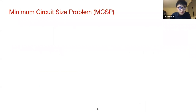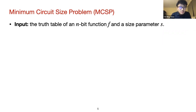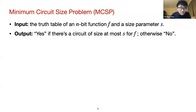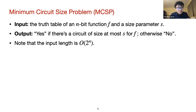Let me formally define the minimum circuit size problem. For MCSP, the input is a truth table of an n-bit Boolean function and a size parameter s. The output is yes if there exists a circuit of size at most s for Boolean function f, and no otherwise. Note that the input length is 2^n, sometimes denoted capital N, so we allow running time like poly(2^n), which is 2^{O(n)}.